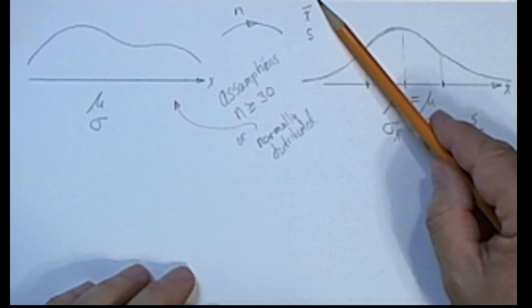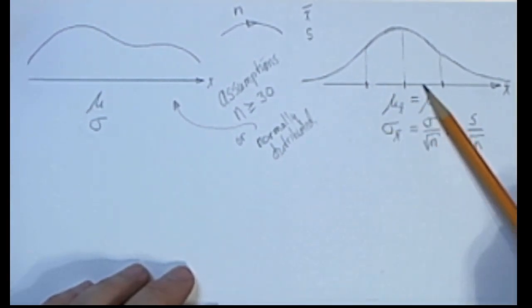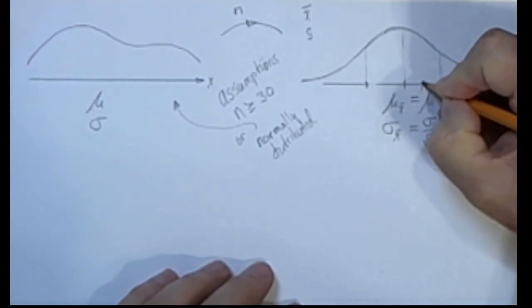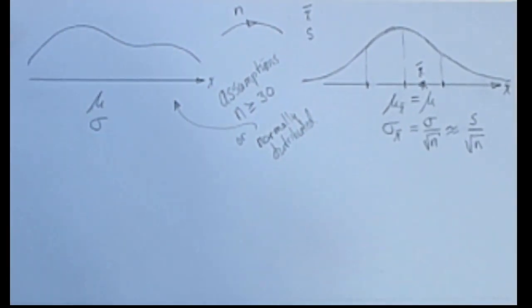Now, our point estimate for the mean, our X bar, will end up somewhere on this number line. For our example, let's say that it ends up right here. There's the X bar that we got from our sample.